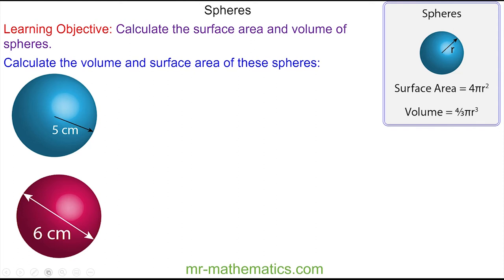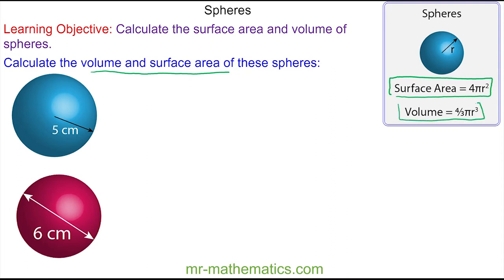Welcome to our lesson on calculating the volume and the surface area of spheres. To work out the surface area we're going to use the formula 4πr², and to work out the volume we're going to use the formula four-thirds of πr³.